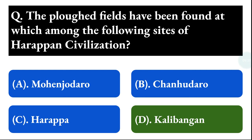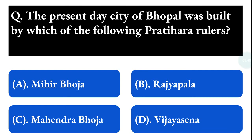Next question: the present-day city of Bhopal was built by which of the following Rashtrakuta rulers? Option A: Mihir Bhoja, option B: Rajabhoja, option C: Mahendra Bhoja, option D: Vijay Sena. The correct answer is option A, that is Mihir Bhoja.